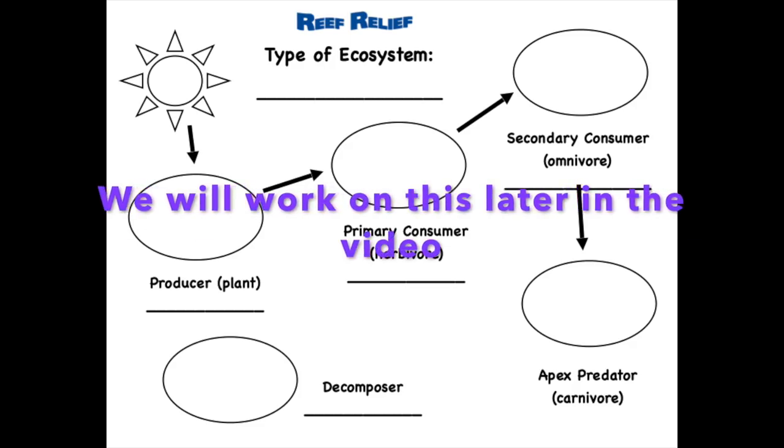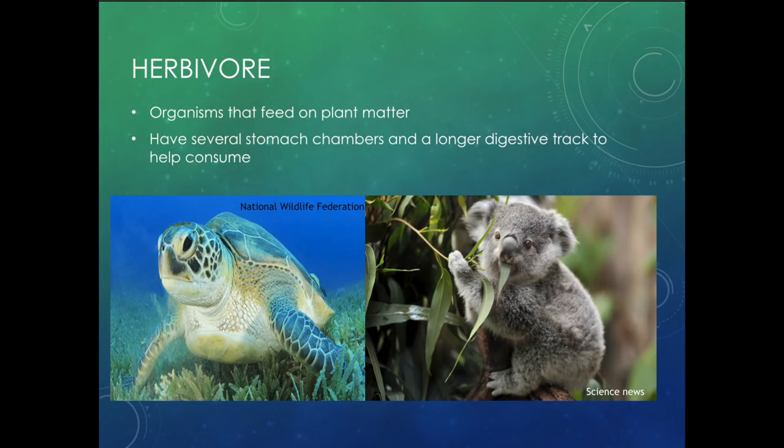Let's start with herbivores. Herbivores eat plants — they don't eat meat; they eat exclusively plants. Most herbivores have several stomach chambers and a longer digestive tract to help them consume all that plant matter. Think about herbivores that are in your ecosystem, maybe in your backyard.